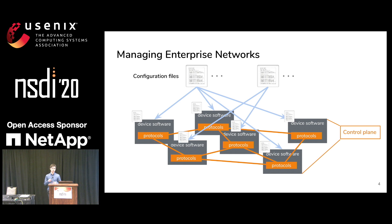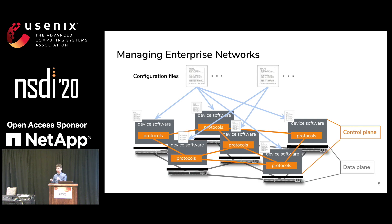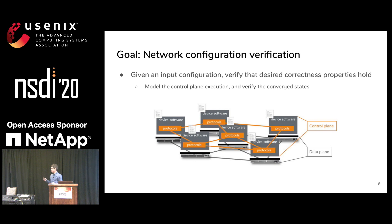We call this the control plane. The control plane protocols execute and most of the time converge to a stable state and produce the data plane. This is all good, but as networks become more complicated, things can easily go wrong and there can be bugs in the configuration files. Our goal is to verify the network configurations — given an input configuration, we want to verify that the desired correctness properties hold.